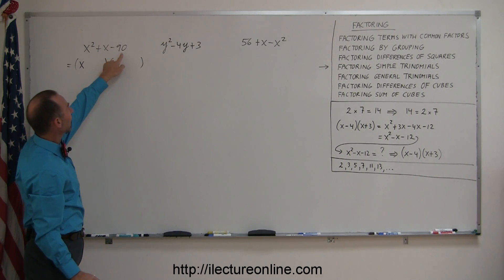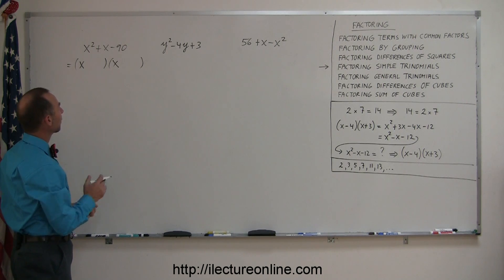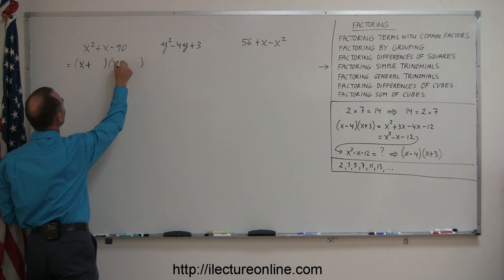Now on the signs, the last term here is negative, and the only way you can get a negative is by multiplying a positive and a negative, that means you need a positive and a negative here.